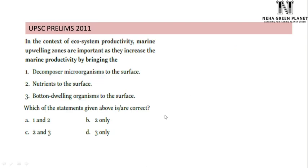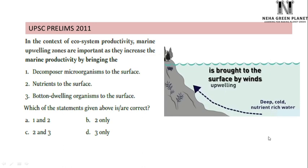Let's solve another question. In the context of ecosystem productivity, marine upwelling zones are important as they increase marine productivity by bringing — decomposers, nutrients, or bottom-dwelling organisms — to the surface. Remember, productivity depends on factors like nutrients, water availability, and chlorophyll, but not on decomposers or other organisms. Marine upwelling is a process by which deep, cold, nutrient-rich water is transferred toward the surface. More nutrients at the surface means more productivity, as algae and plants use sunlight and nutrients to undergo photosynthesis. So the correct option is nutrients only.